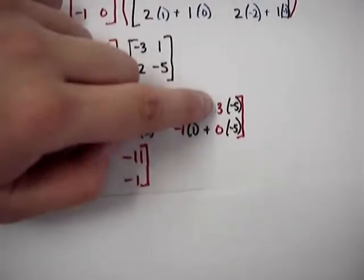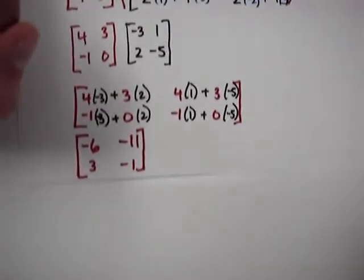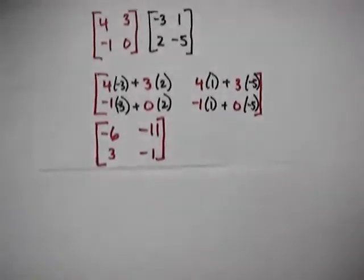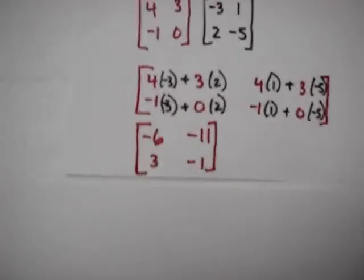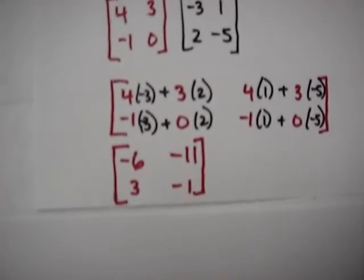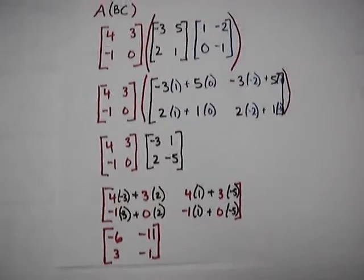4 plus negative 15 comes to negative 11. Negative 1 times 0 is negative 1. So the red matrix here is our answer. Let's take a moment to study the entire problem once more.